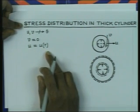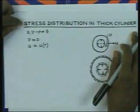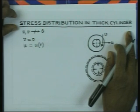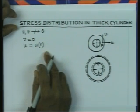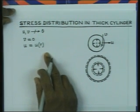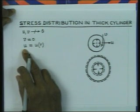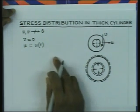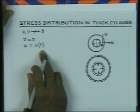With this deformation pattern, we can find the stress distribution in the thick cylinder starting from the displacement u. This displacement is related to strains, and strains are related to stresses by Hooke's law. If we can determine the displacement, we can calculate the stress distribution. So the problem of stress distribution in a thick cylinder is really a problem of determining the distribution of displacement in the thickness direction.